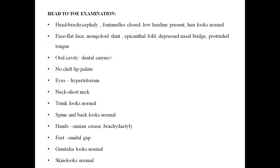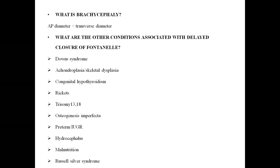Head-to-toe examination for Down syndrome features: brachycephaly, fontanels closed, low hairline, some children have alopecia or sparse hair. Flat face, mongoloid slant, epicanthal fold, depressed nasal bridge, protruded tongue. Oral cavity: dental caries common, no cleft lip or cleft palate, hypertelorism present. Short neck. Trunk and spine look normal. Hands: simian crease present, brachydactyly present. Sandal gap seen in the feet. Genitalia and skin look normal.